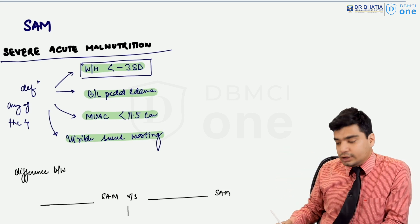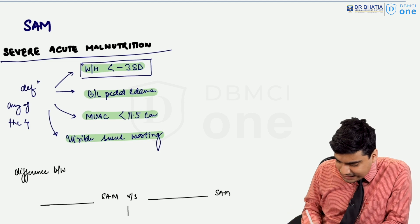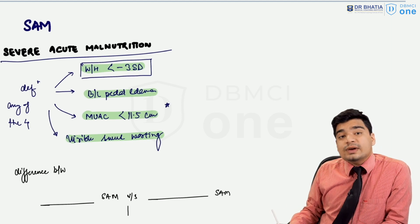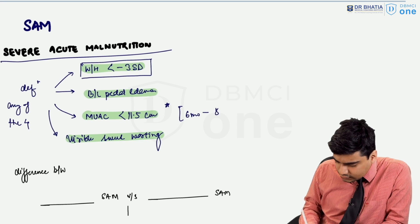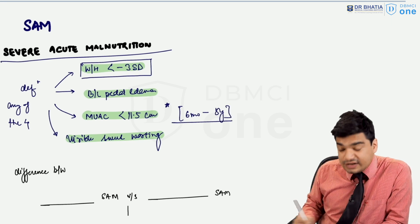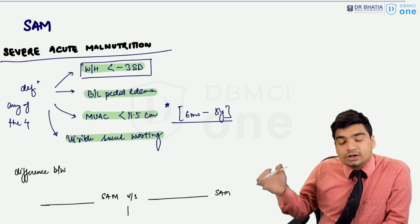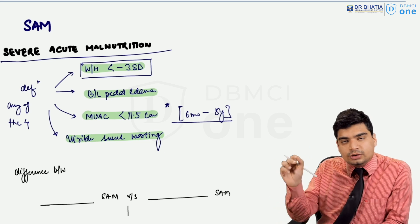A small note I want you to remember: this MUAC is only for children between six months to five years of age. We do not use this criteria for children who are less than six months of age.